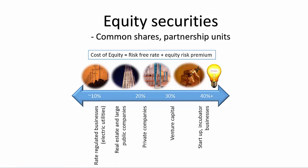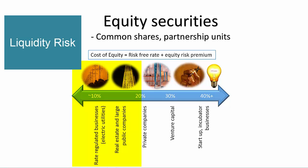Here is a spectrum of required rates of return on equity for various sorts of business. At the low end, you have relatively safer types of businesses, such as those that are rate regulated, like electric utilities and gas pipelines. As you move up the scale, you have other large public companies, followed by private companies. Both may be established businesses, but being large and publicly traded helps investors mitigate liquidity risk — the risk that they can't sell their investment position — and for this benefit investors expect a lower required rate of return.